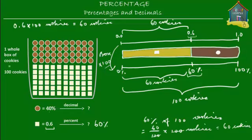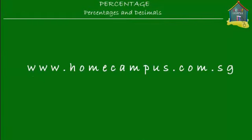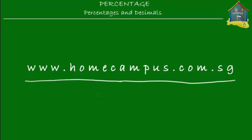So there you go: 40% equals 0.4 in decimal. To convert from percentage to decimal, divide by 100. To convert from decimal to percentage, multiply by 100. That's really all there is to it. I hope you got what I taught, and I hope you'll go and do some practice — practice makes perfect. Visit www.homecampus.com.sg for practice problems and to see how good you're getting at math. This is Em signing off for now. Bye-bye.